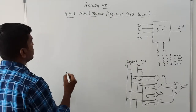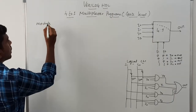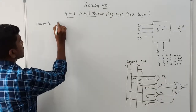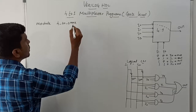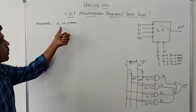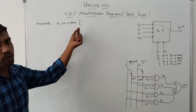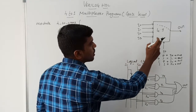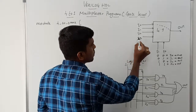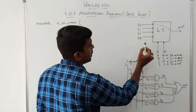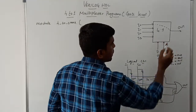Now I start to write the program. First, declare the module, then the module name — which is 'mux4to1'. First you write 'module', then the module name. After that, declare the port list. The input signals used in the 4-to-1 MUX are 6 signals: I0, I1, I2, I3, S1, and S0. There is only one output signal named 'out'.